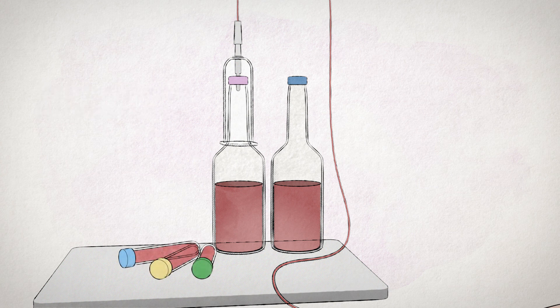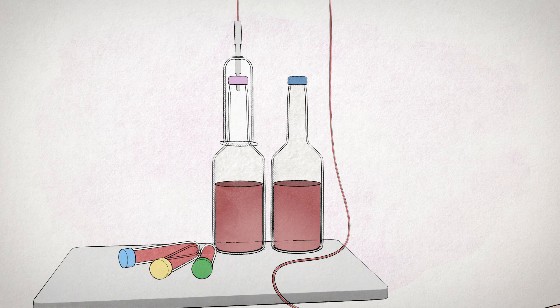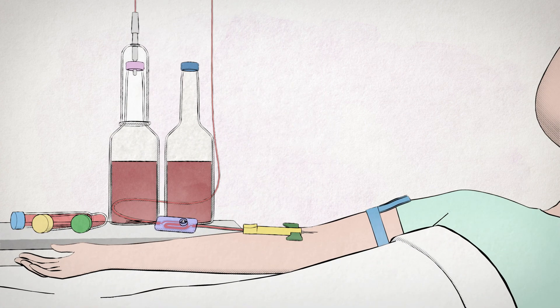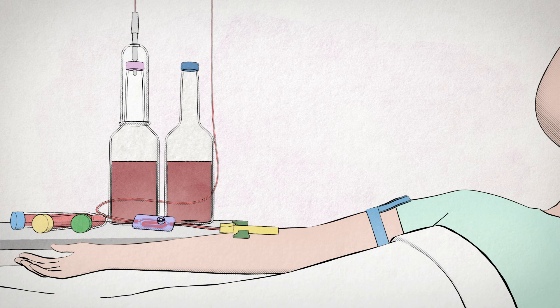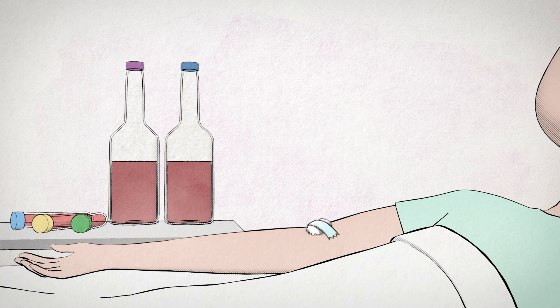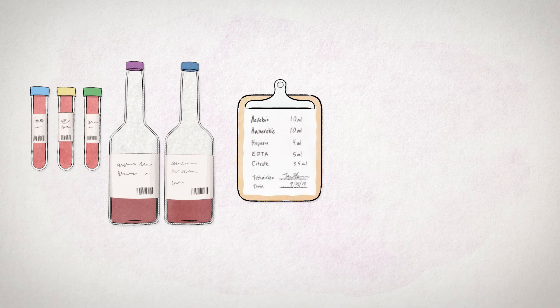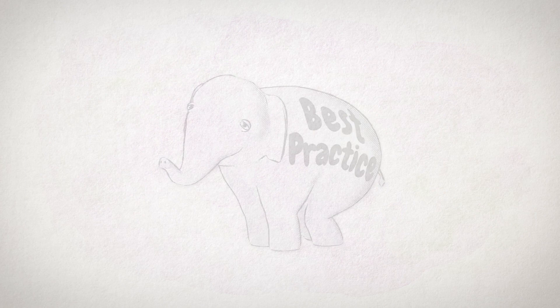Collect any additional lab vials after completing the blood culture set. After collection, withdraw the butterfly, activating the needle's safety mechanism. Following hospital policy, dress the venipuncture site, dispose of the collection set, and then label, document, and send the specimens to the lab.